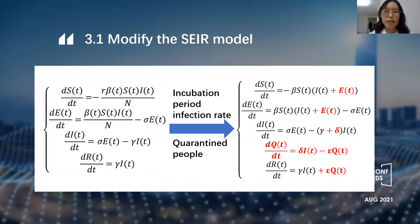In the modification of the ICIR model, we introduced the incubation period infection rate and added a new compartment of people under quarantine. So the model changed from what it looked like on the left to the right.